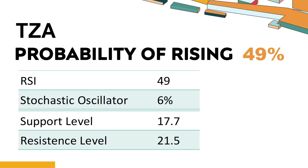Trend Outlook: TZA has a 49% probability of rising stock price. When the probability of rising is lower than 50%, the probability of falling is relatively high. Combining multiple technical analysis indicators, TZA has four bullish signals and four bearish signals. TZA's short-term support level is 18; if it falls below 18, it will have a chance to test 17.7. The short-term resistance level is 20.7; if it breaks through 20.7, it will look up to 21.5.